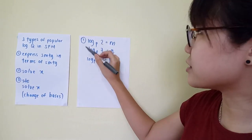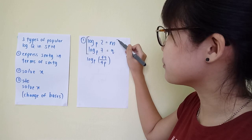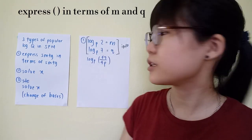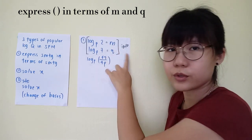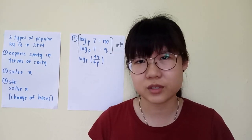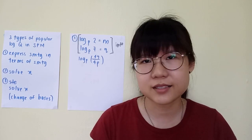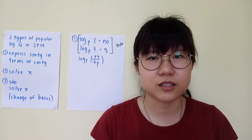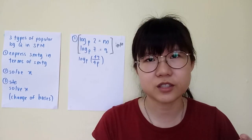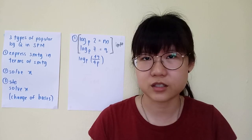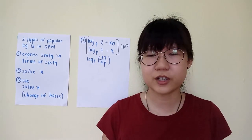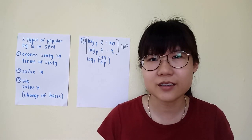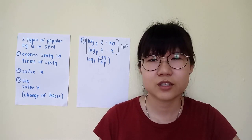An example of Type 1 is this question — you are given some information and then asked to express an expression in terms of M and Q. When it comes to questions which involve expressing something in terms of something else, the first step is always to make sure it's not in multiplication and division — you have to make sure it's in either addition or subtraction only. You apply the three laws of logarithms.